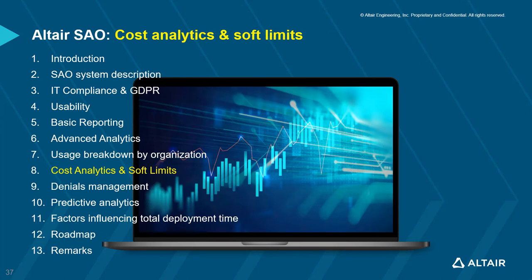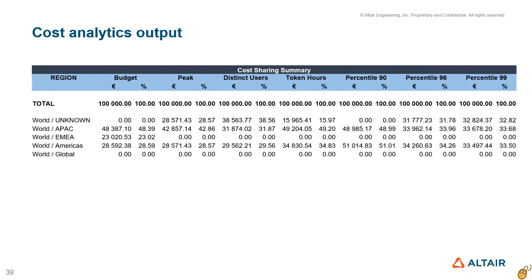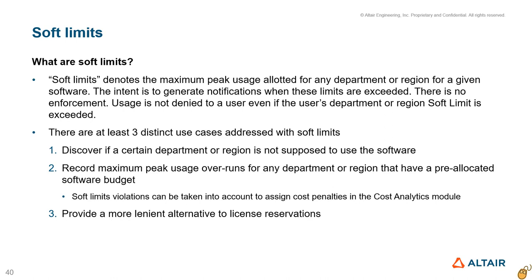Users need to fill in the cost analytics setup form. Costing can calculate cost sharing for a given vendor or a feature by region or by department. Users have the option of choosing one or multiple usage metrics for calculating shares. The cost analytics module creates an Excel file with cost sharing information that can be modified further for incorporation into corporate costing systems. Admins can set up soft limits indicating maximum allotted peaks for any or all departments and regions, with violations recorded and notifications sent to admins.